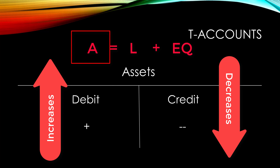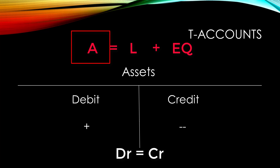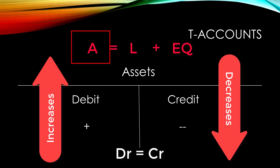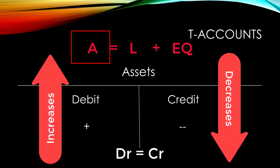For all five of these rules, debits have to equal credits every single time — there'll never be an exception to this. So once again, assets are increased by debits and decreased by credits.